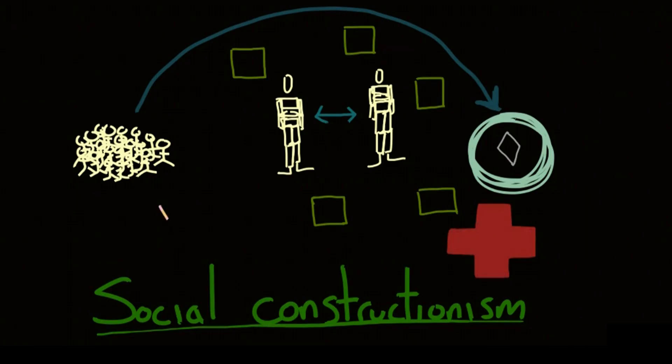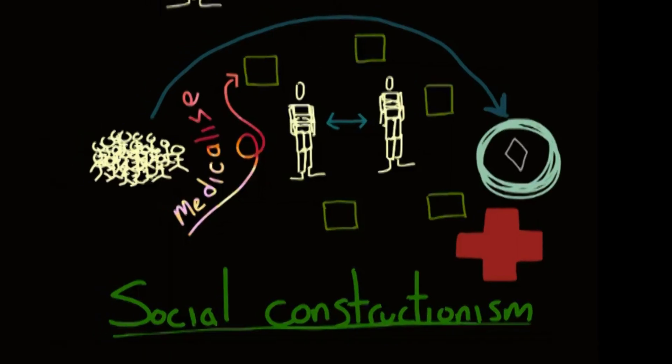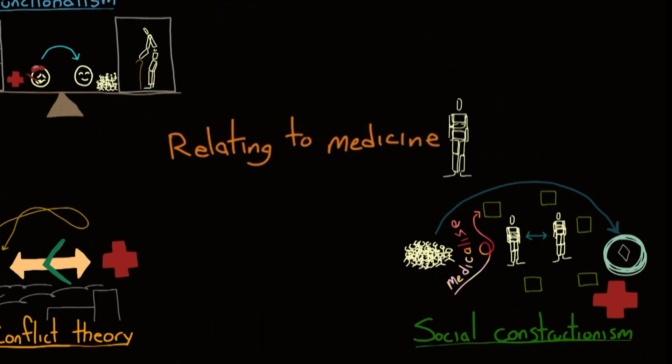You also have to be aware of medicalization, where patients or doctors will construct an illness out of ordinary behavior. A child who can't sit still in class doesn't necessarily have ADD. They might just need to get out on the playground and run. Now that we know to be aware of social-based assumptions, let's check out how symbolic interactionism applies to medicine.